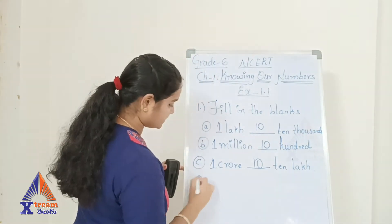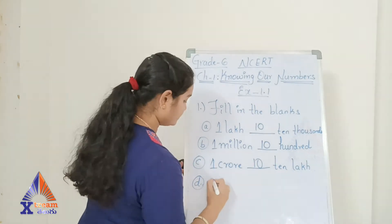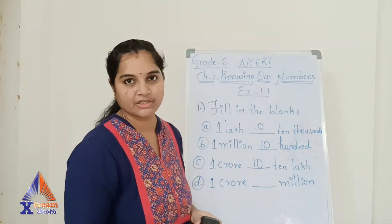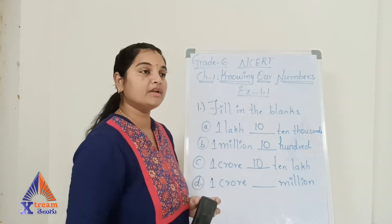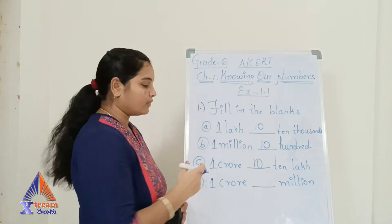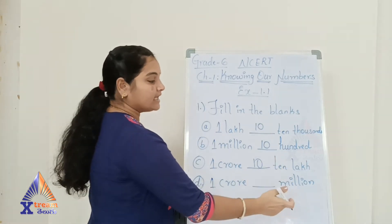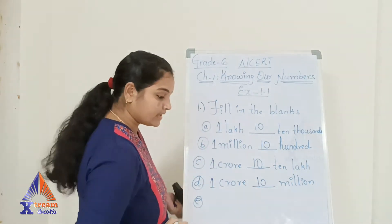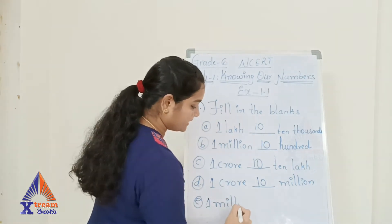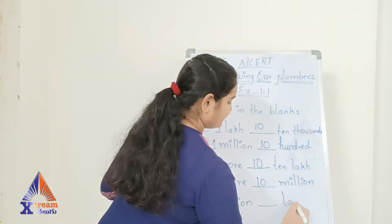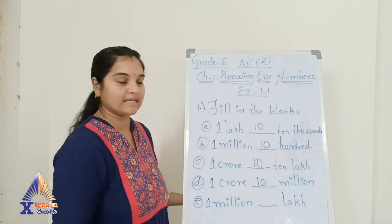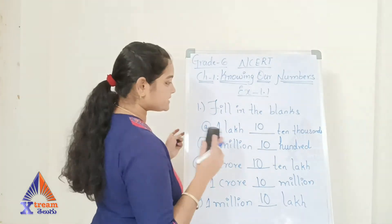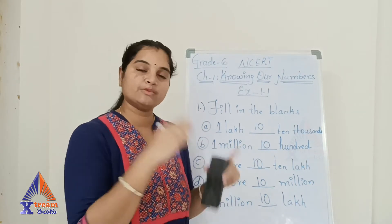Question D: one crore is how many millions? This is the same as the previous question asked in a different way — just as 'add two and three' and 'the sum of two and three' are the same. Since ten lakh equals one million, one crore equals ten million, so the answer is ten. Question E: one million is how many lakhs? One million is ten lakh in Indian numeration, so the answer is ten. If you notice, all answers in the first part are ten.